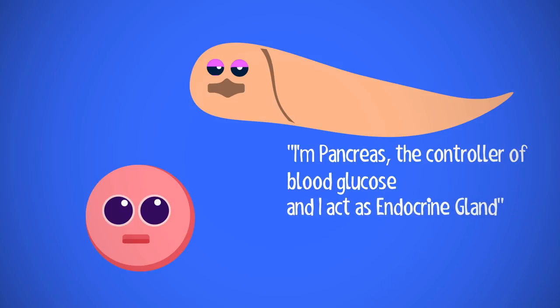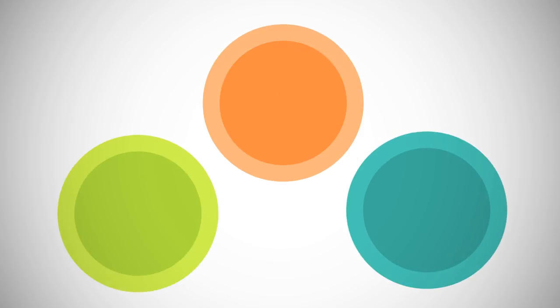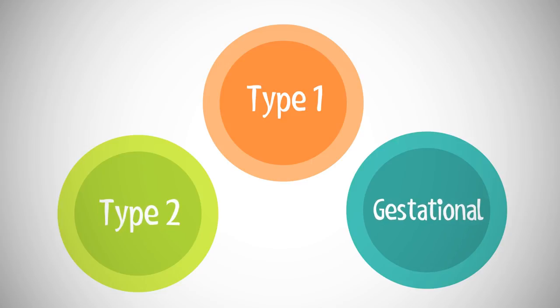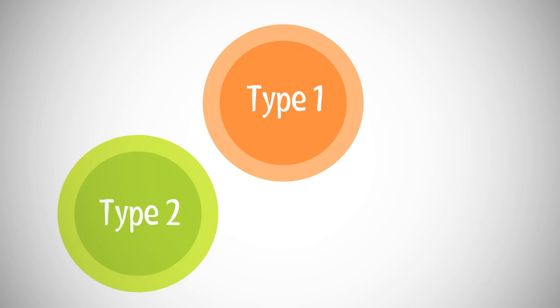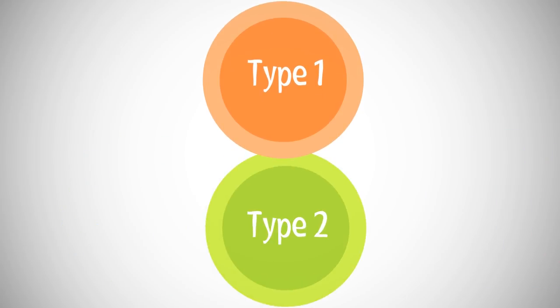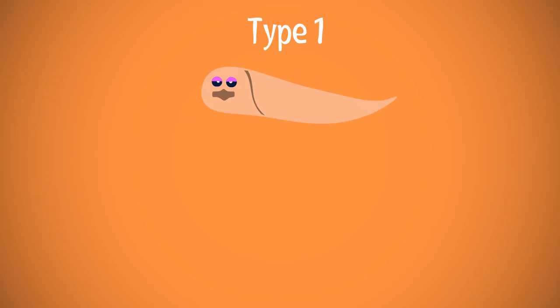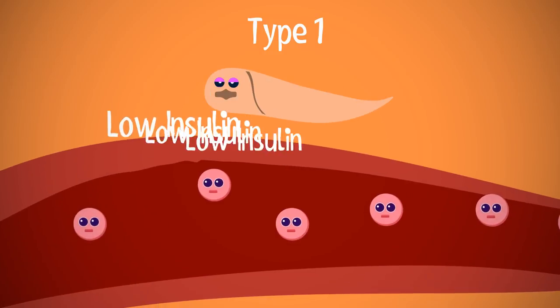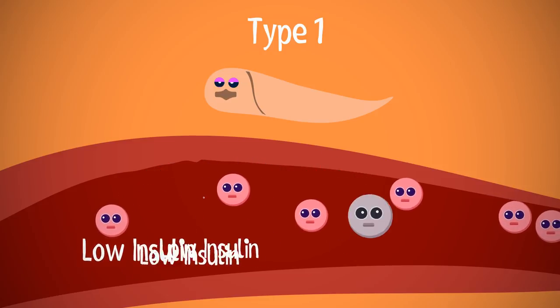There are three main types of diabetes: type 1 diabetes, type 2 diabetes, and gestational diabetes. For now we will discuss only type 1 and type 2. Type 1 diabetes is a form of diabetes in which not enough insulin is produced, resulting in high blood sugar levels in the body.